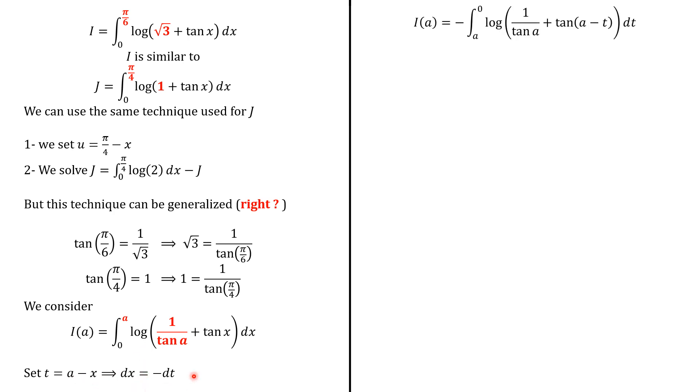So i of a we write as follows, minus dt here, which is dx, and then x is a minus t, and then we have 0 here and a. But this minus allows us to switch the limits, and then i of a writes as follows.